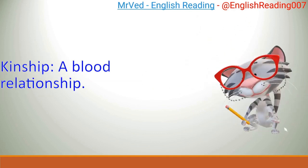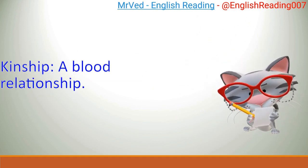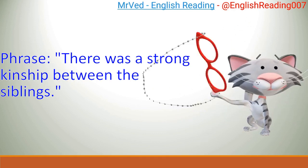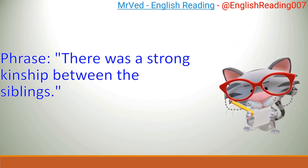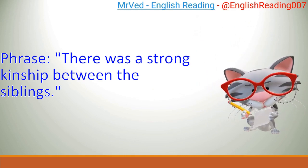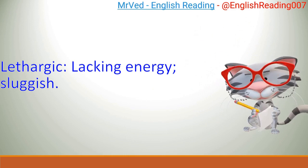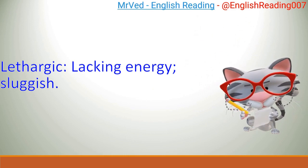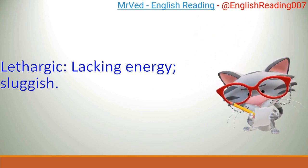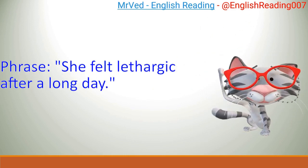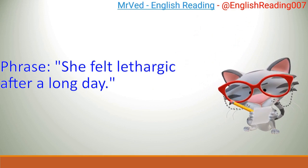Kinship: a blood relationship. Example: There was a strong kinship between the siblings. Lethargic: lacking energy, sluggish. Example: She felt lethargic after a long day.